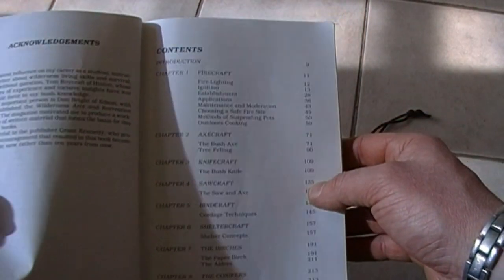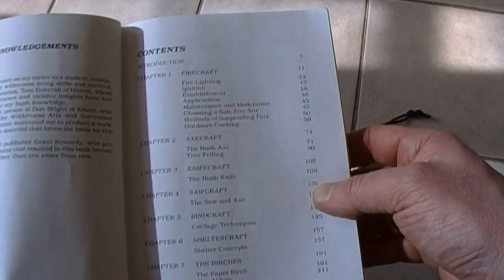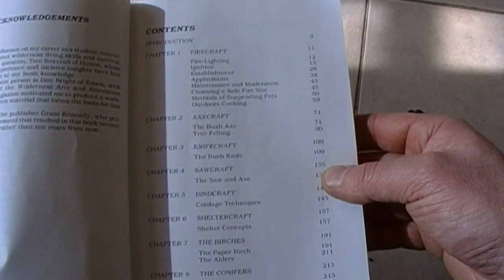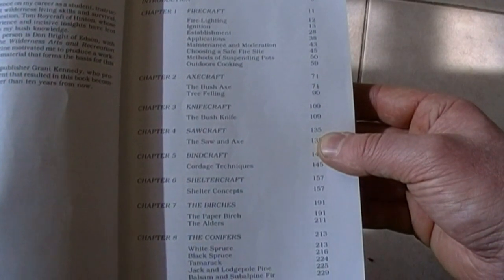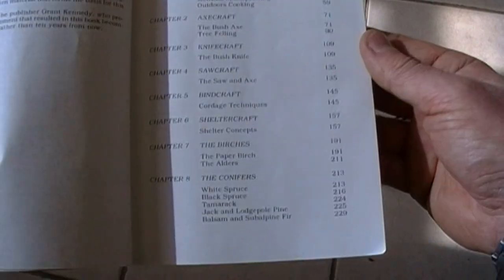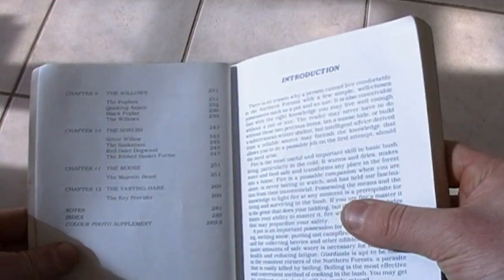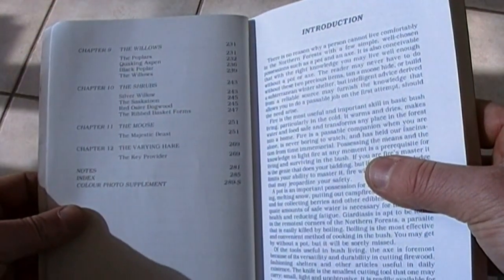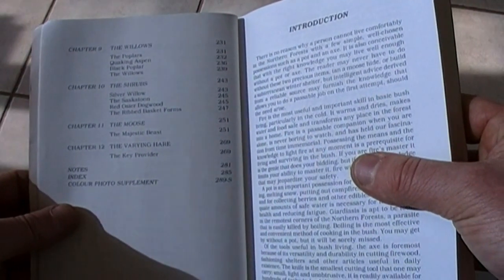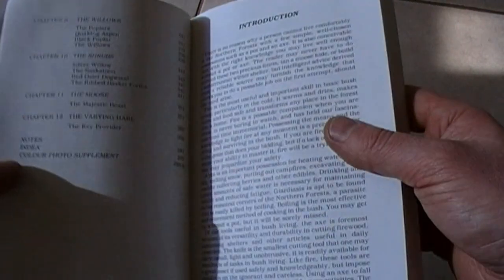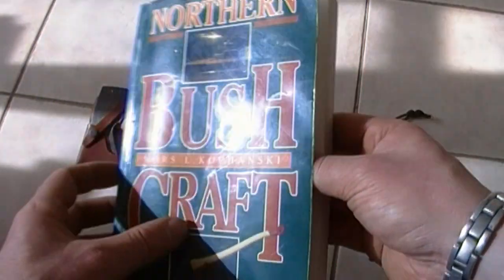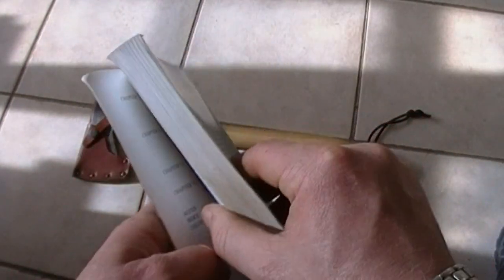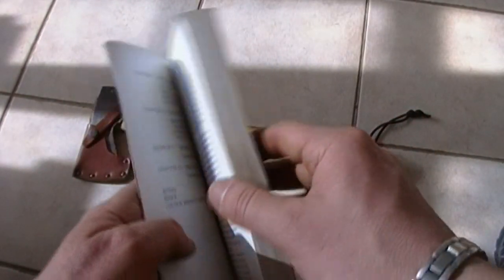So, I mean, it's really basic. Here are the contents. Firecraft, axe craft, knife craft, saw craft, bind craft, shelter craft, birches, conifers, shrubs, willows. And really focuses on two animals. That's the moose and the hare. So, you see how bare bones that is? How straightforward that is? So, he takes those basic concepts and really elaborates on them throughout the entire book.